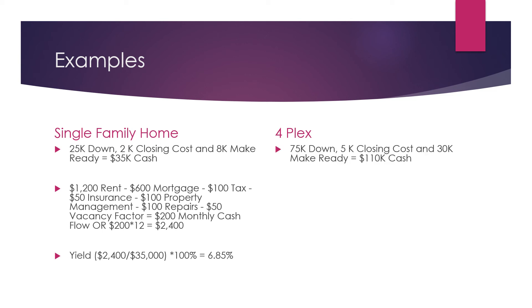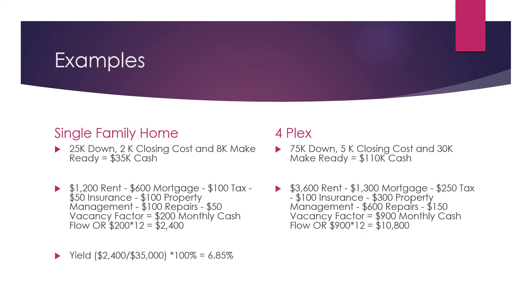Now let's look at a fourplex. Maybe it's $75,000 down, $5,000 in closing costs, $30,000 in make-ready — so you're spending $110,000 to control that asset. The rent is $3,600, minus $1,300 mortgage, minus $2,500 in taxes, minus $100 insurance, minus $300 property management, minus $600 in repairs, minus $150 vacancy factor. Add all that up and you're left with $900 per month cash flow. Take the $900 times 12, that's $10,800. So yield: $10,800 divided by $110,000 times 100% equals a 9.82% yield.